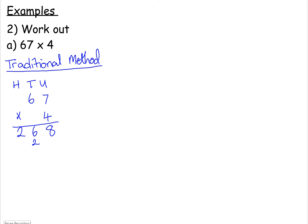So I'll just run through that quickly. 7 times 4 is 28 — put the 8 here, carry the 2. And then 6 times 4 is 24, add this 2 that we're carrying, it gives 26. So 67 times 4 is 268. That's the traditional method.